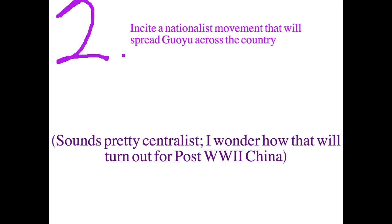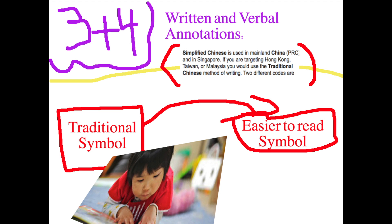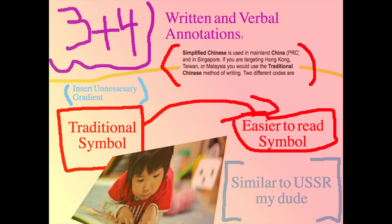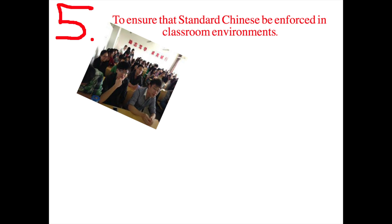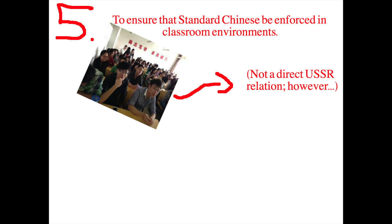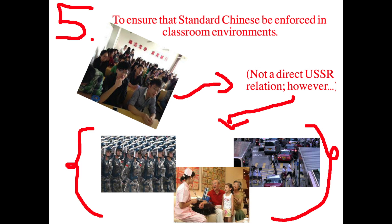The second component was to incite a nationalistic movement that would spread standard Chinese across the country. The third was to introduce annotated written Chinese characters in an effort to facilitate literacy across the country — this is basically where we get simplified Chinese and traditional Chinese on Google Translate. The USSR actually did this to their language reform for the same reason, just with a bit more centralism and abbreviations to militaristic vocabulary. The fifth and final part of the plan was to ensure that standard Chinese be enforced in classroom environments. This fifth principle actually extends to all public services in mainland China.